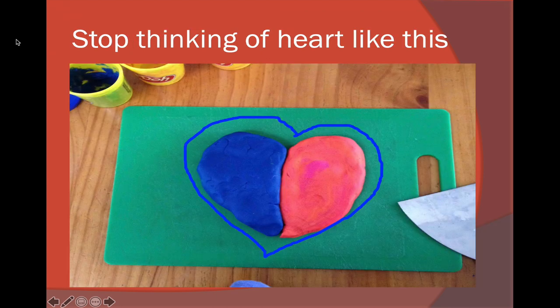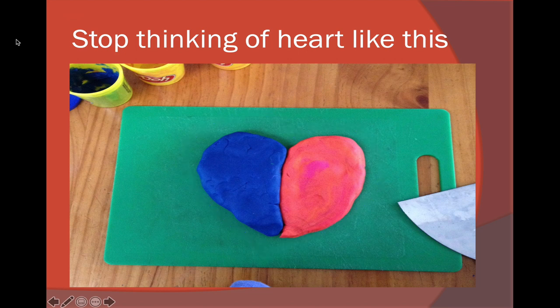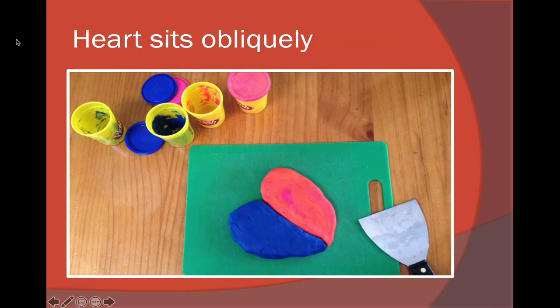Now, the second thing you have to do is stop thinking of the heart like a typical diagram. In fact, the heart's on its side. What we call the long axis of the heart is actually oblique — it runs from the right shoulder to the left hip. And what we call the short axis of the heart is also oblique, running from the left shoulder to the right hip.